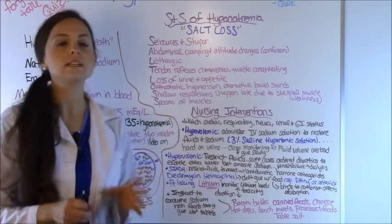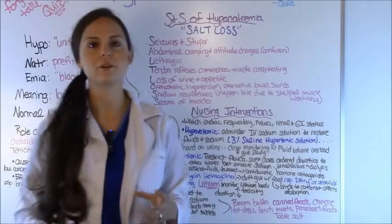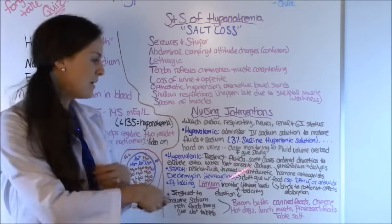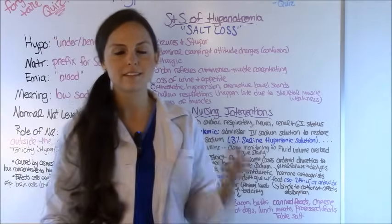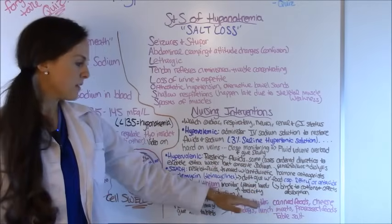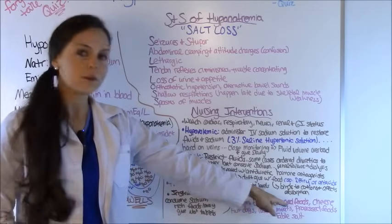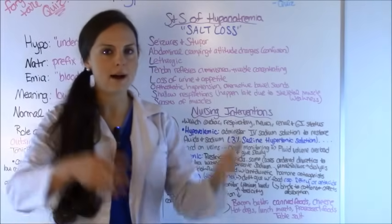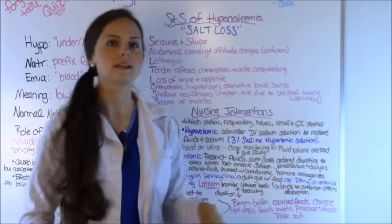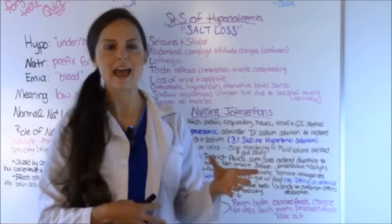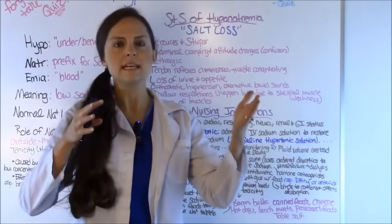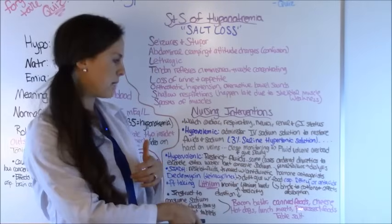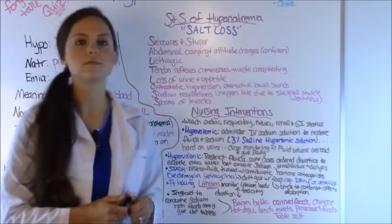Last but not least, instruct the patient to consume sodium-rich foods. Sodium-rich foods include bacon, butter, canned foods — that's a big one that people often overlook; they think canned vegetables like canned corn are healthy, but they have a lot of salt. Test questions like to use that: they'll say which food should a patient with high sodium avoid, and canned food might be an option. Other sodium-rich foods are cheese, hot dogs, lunch meat, processed food, and table salt.